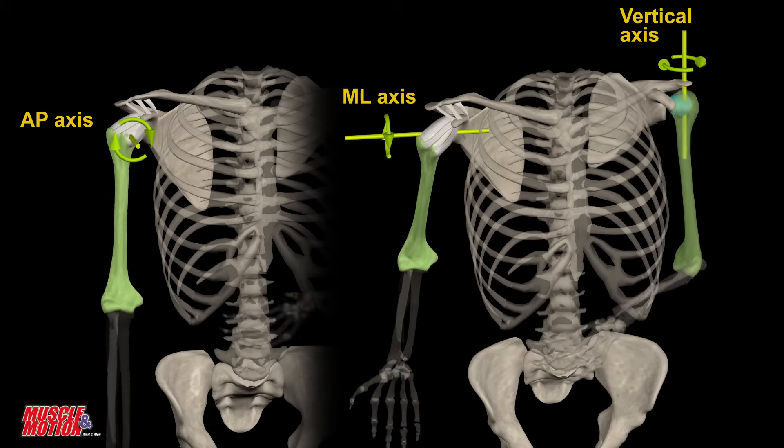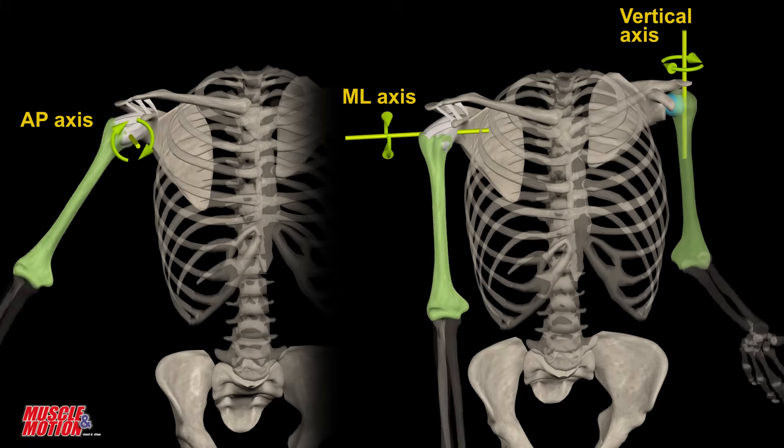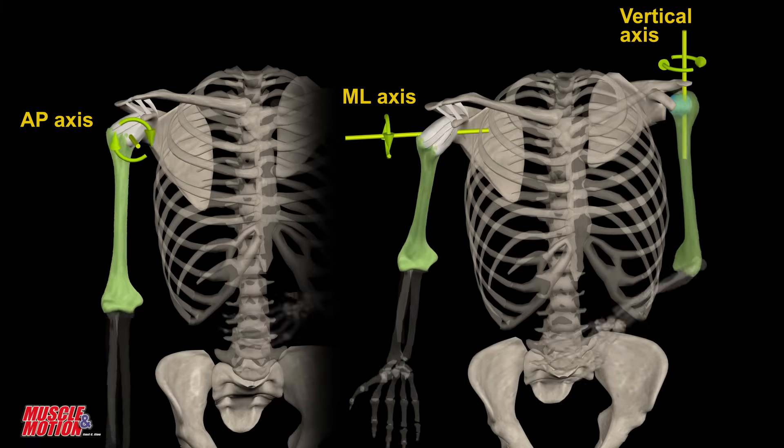The shoulder, for example, allows movement in all three planes and therefore has three axes of rotation.